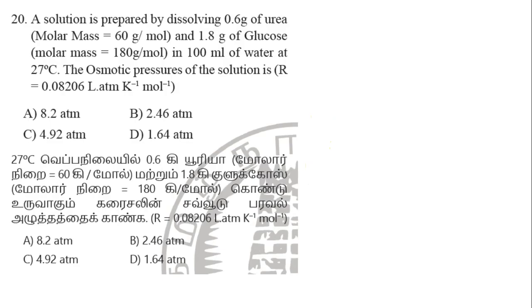A solution is prepared by dissolving 0.6 gram of urea, molar mass of urea 60 gram per mole, and 1.8 gram of glucose, molar mass of glucose 180 gram per mole.